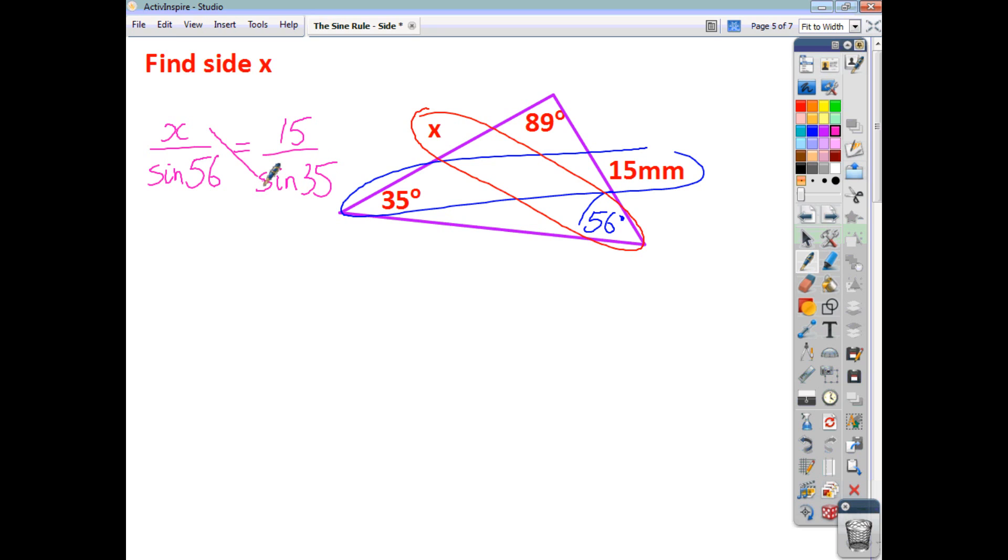Cross multiplication, x times sine 35 is equal to 15 times sine 56. Dividing both sides by sine 35 gives us that x is 15 sine 56 divided by sine 35. And that gives us an answer to one decimal place, 21.7. And your units will be millimeters this time.